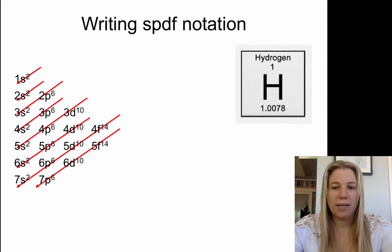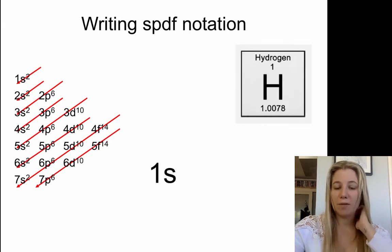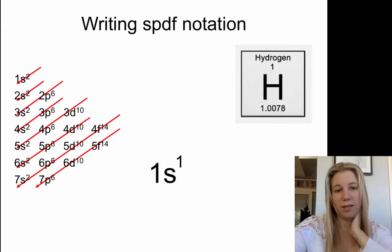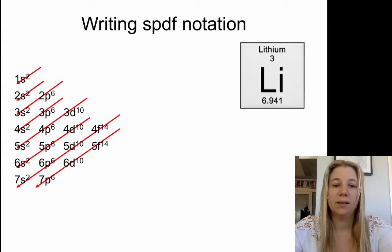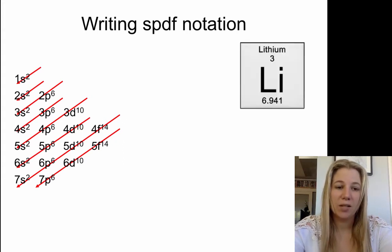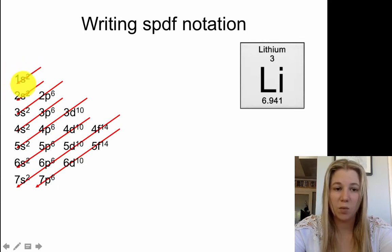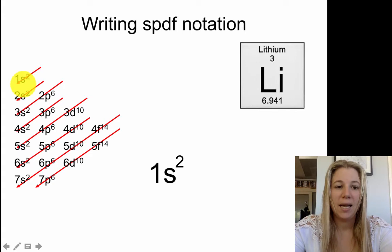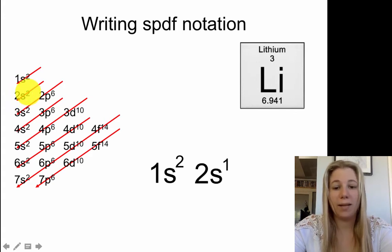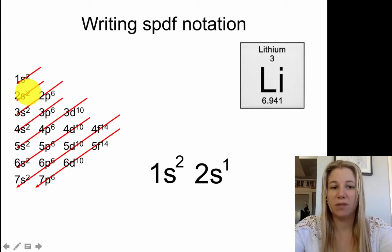So let's have a go at writing some. Hydrogen, we have 1s and there's one electron in that 1s shell. Lithium, we've got three electrons here. So again, we start off here and the first two electrons are going to go into this 1s2. The next electron is going to jump into the 2s orbital, but it's only got one electron left. So that's the notation for lithium.